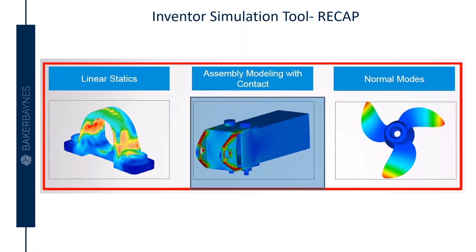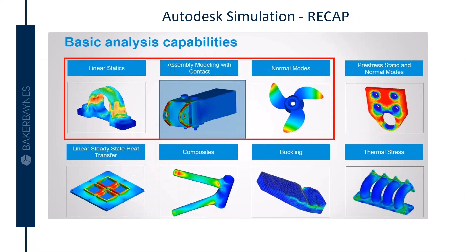First is linear static, so static that can be simulated within Inventor. Second being assembly modeling with contact, so contact analysis can be done in here. And the final being modal analysis, the normal modes, so the frequencies that could be simulated within Inventor.